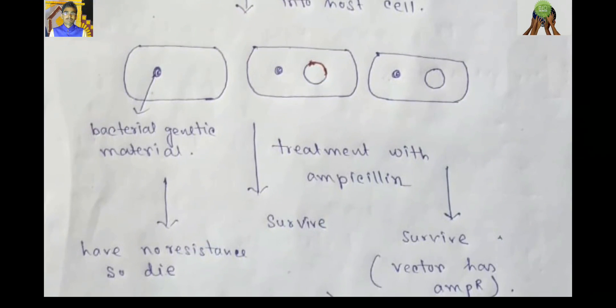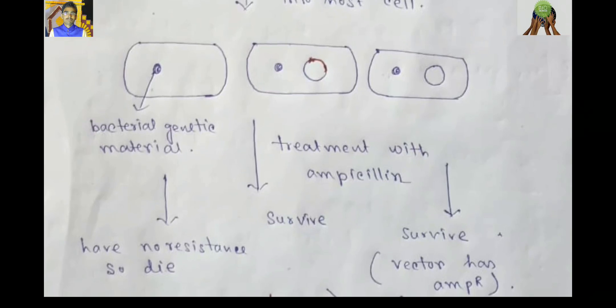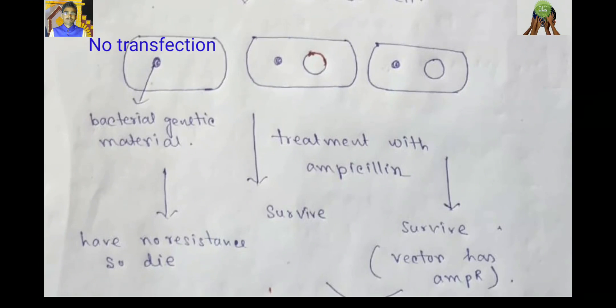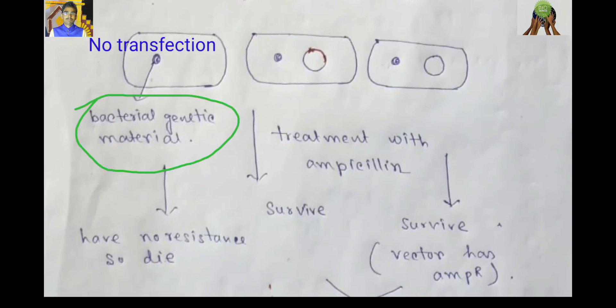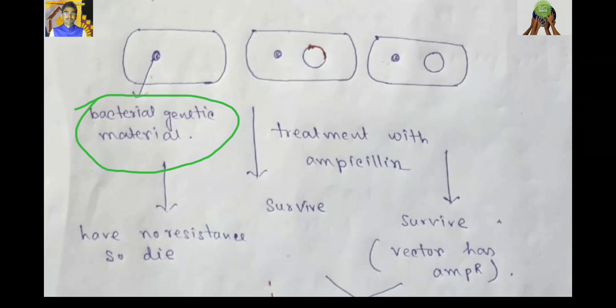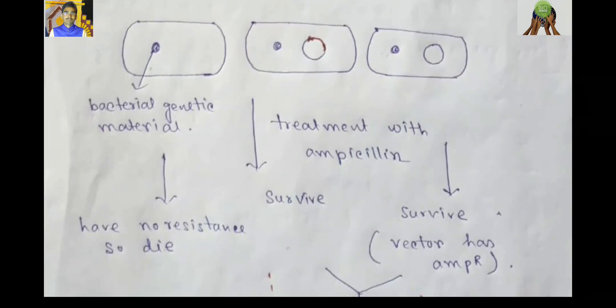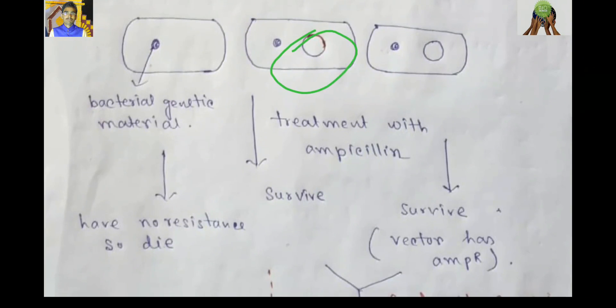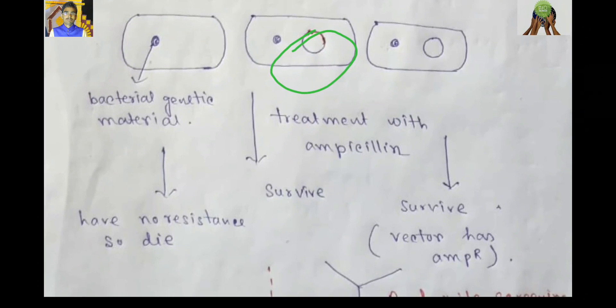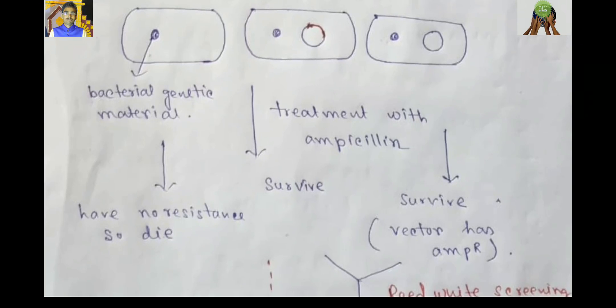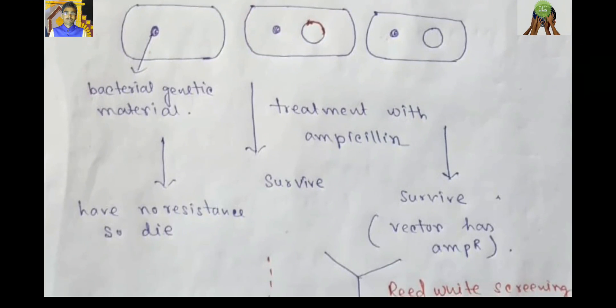In the first host cell, you can see that no transfection occurred. There present only bacterial genetic material. In the second bacterial host cell, you can see recombinant DNA enter. And in third cell, you can see recombinant DNA can enter.